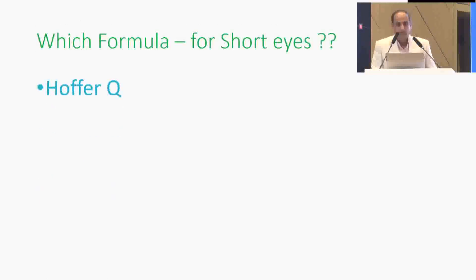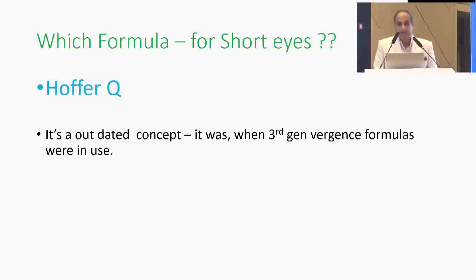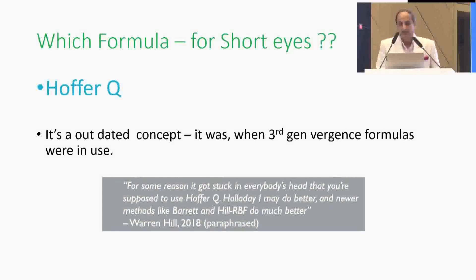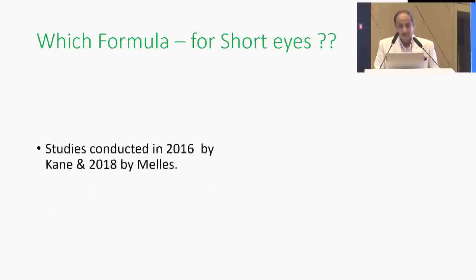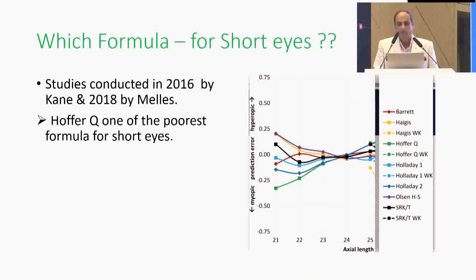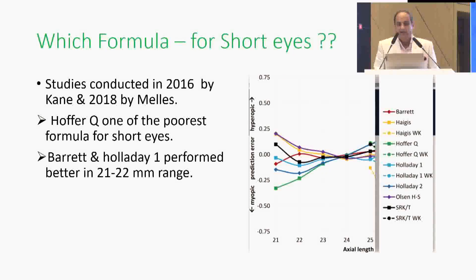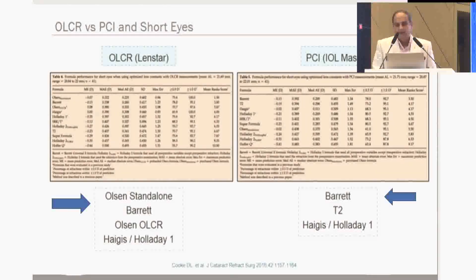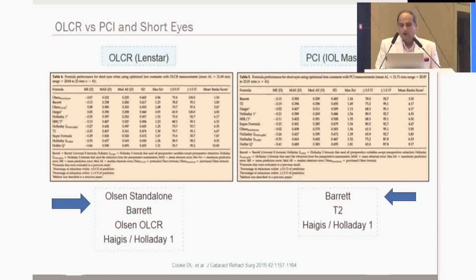For short eyes, which formula? Hoffer Q is an outdated concept — it was a third-generation formula that somehow got stuck in everyone's head. Holladay 1 may be better, and newer methods like Barret and Hill RBF also do much better. Studies from 2016 by Kane and 2018 by Bellis showed that Hoffer Q is one of the poorest formulas for short eyes. Barret and Holladay 1 performed better in the 21–22 mm range. For the Lenstar machine, use Olson standalone, Barret, or Olson OLCR, and Haigis or Holladay 1; for IOL Master, use Barret or T2 and Haigis or Holladay 1.